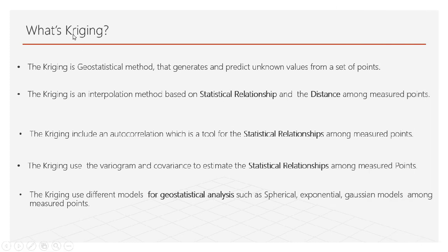Now we arrive at the Kriging method. What is Kriging? Kriging is a geostatistical method that generates and predicts unknown values from a set of points. It is an interpolation method based on statistical relationships and the distance among measured points. The difference from IDW is that IDW is based only on distance, but Kriging is based on the statistical relationship among measured points as well as the distance.